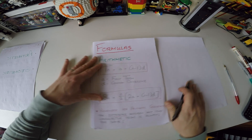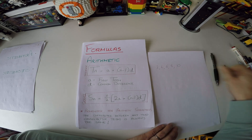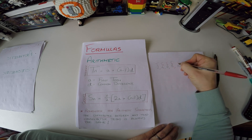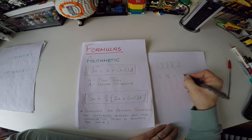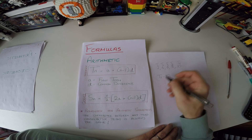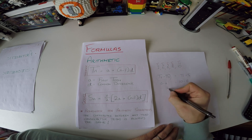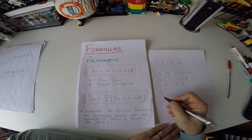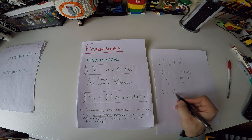For arithmetic sequences, the difference between any two consecutive terms is always the same. For example, with the sequence 2, 4, 6, 8, 10 — labelled T1 through T5 — T3 minus T2 should equal T5 minus T4, that is 6 minus 4 equals 10 minus 8, both equal to 2. The general notation is Tn minus Tn-1 equals the common difference d, where Tn-1 is the term just before Tn.